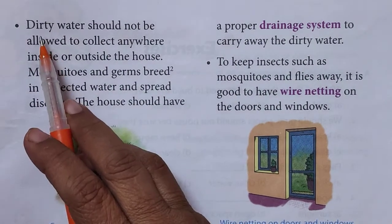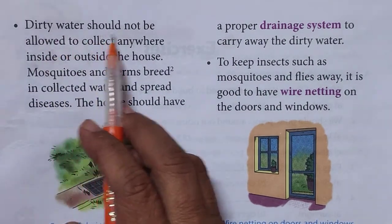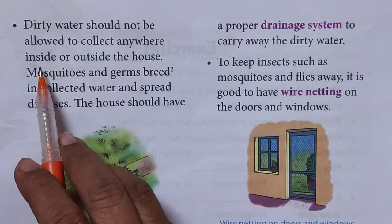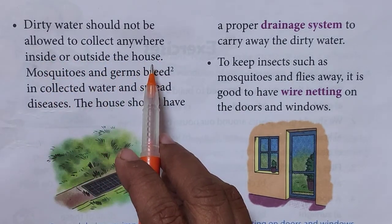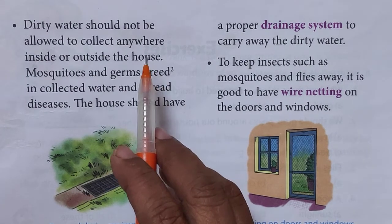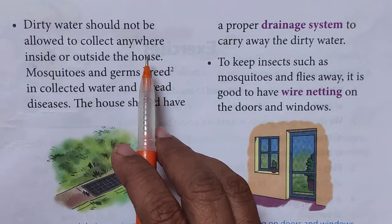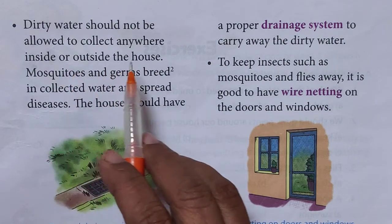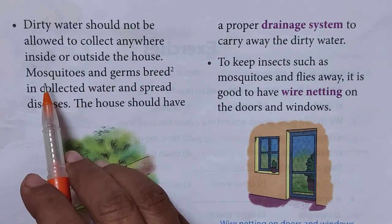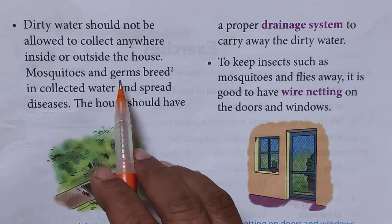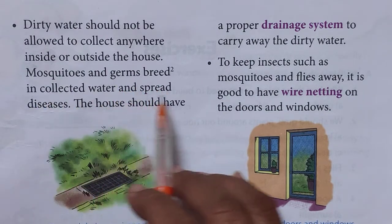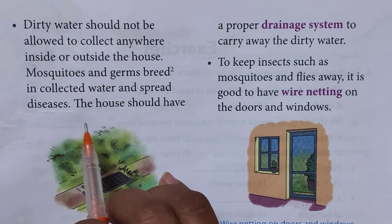Dirty water should not be allowed to collect anywhere inside or outside the house. If water is made stagnant around or inside the house, it will welcome mosquitoes and germs to breed in the collected water and spread diseases.